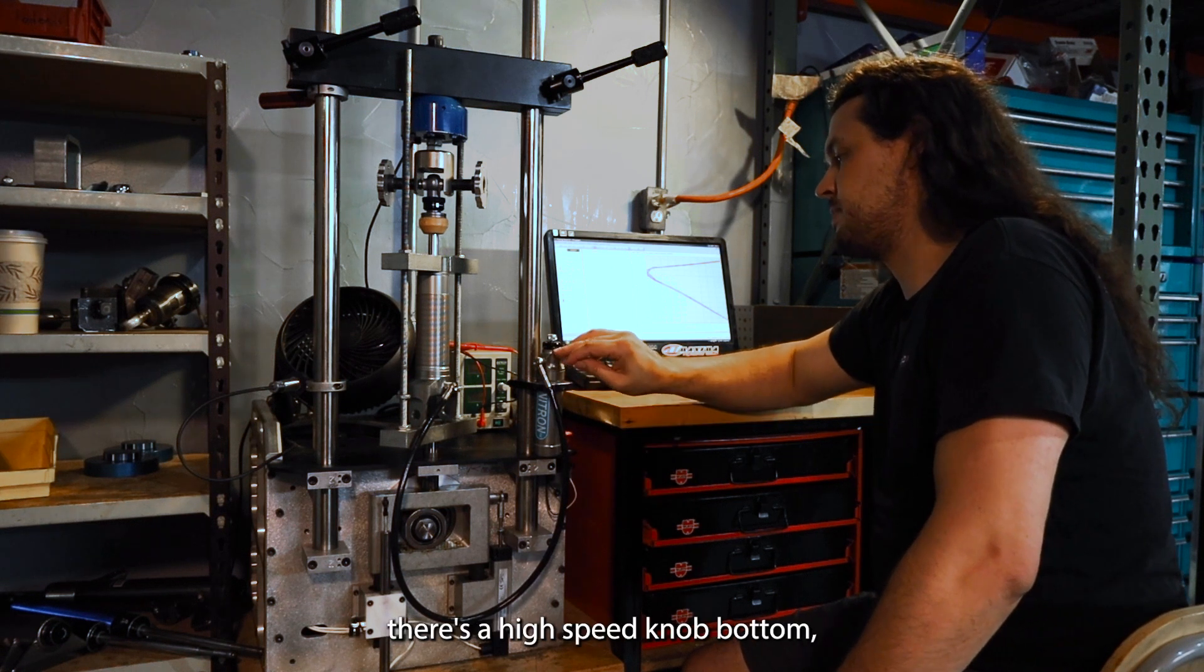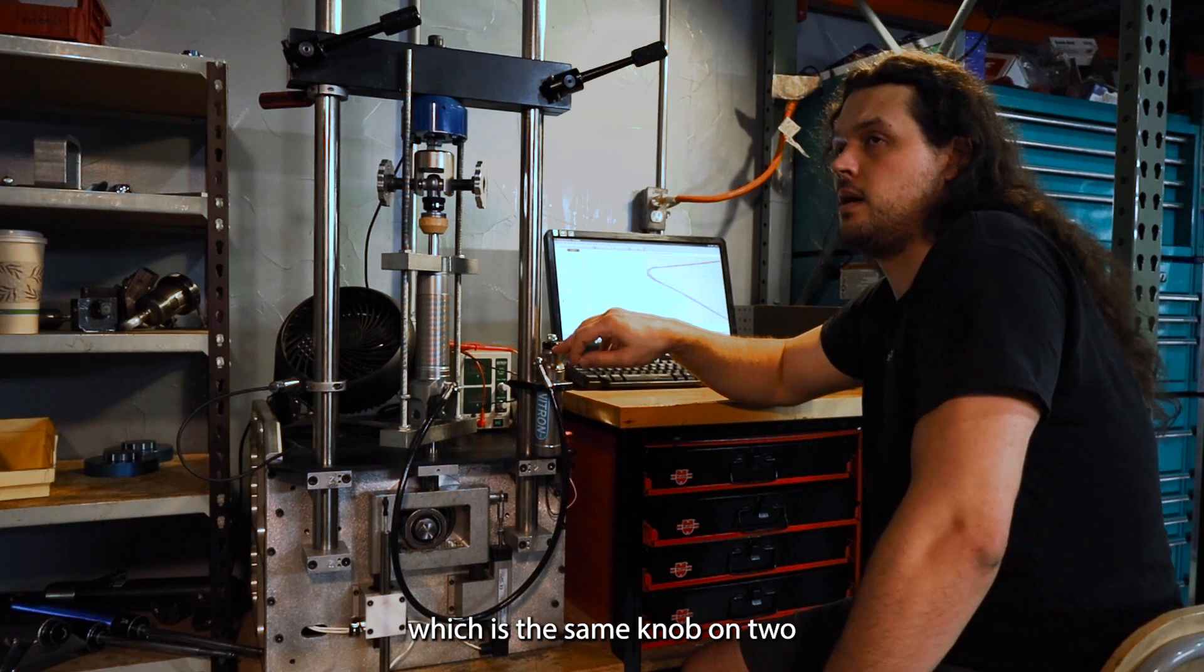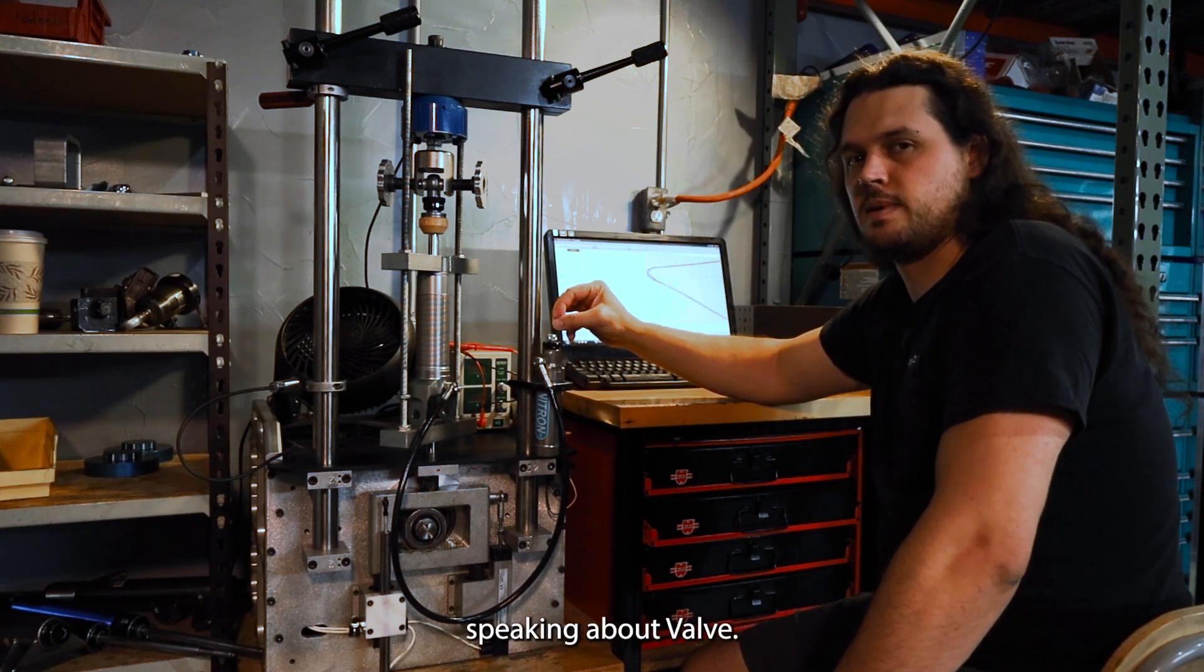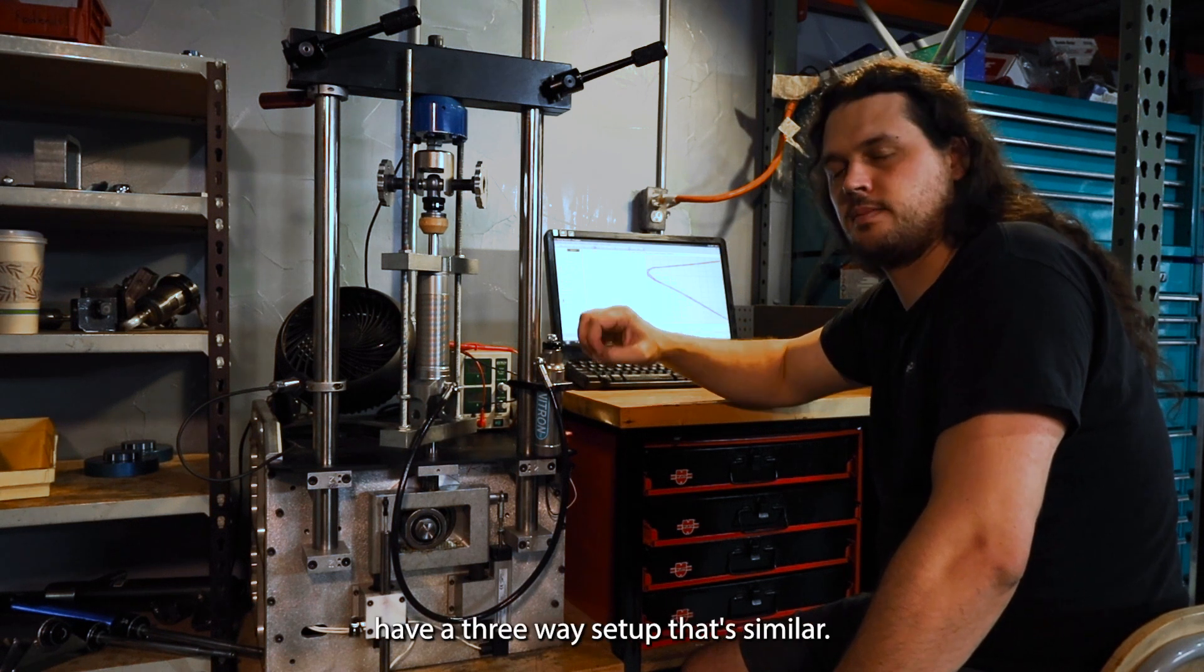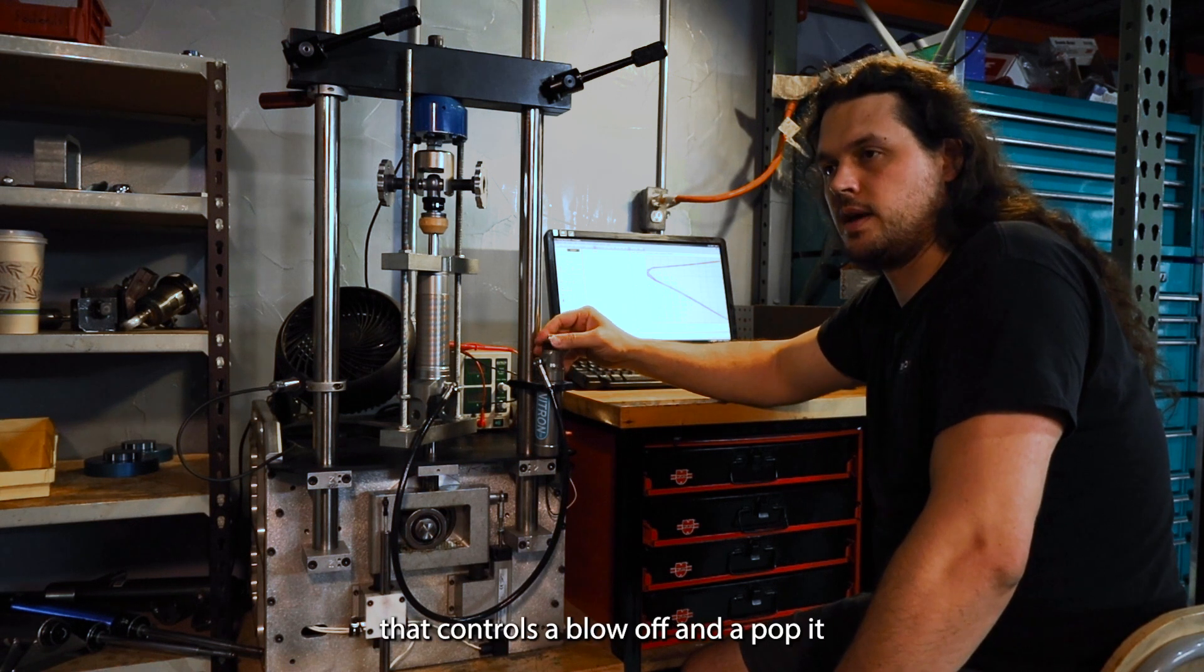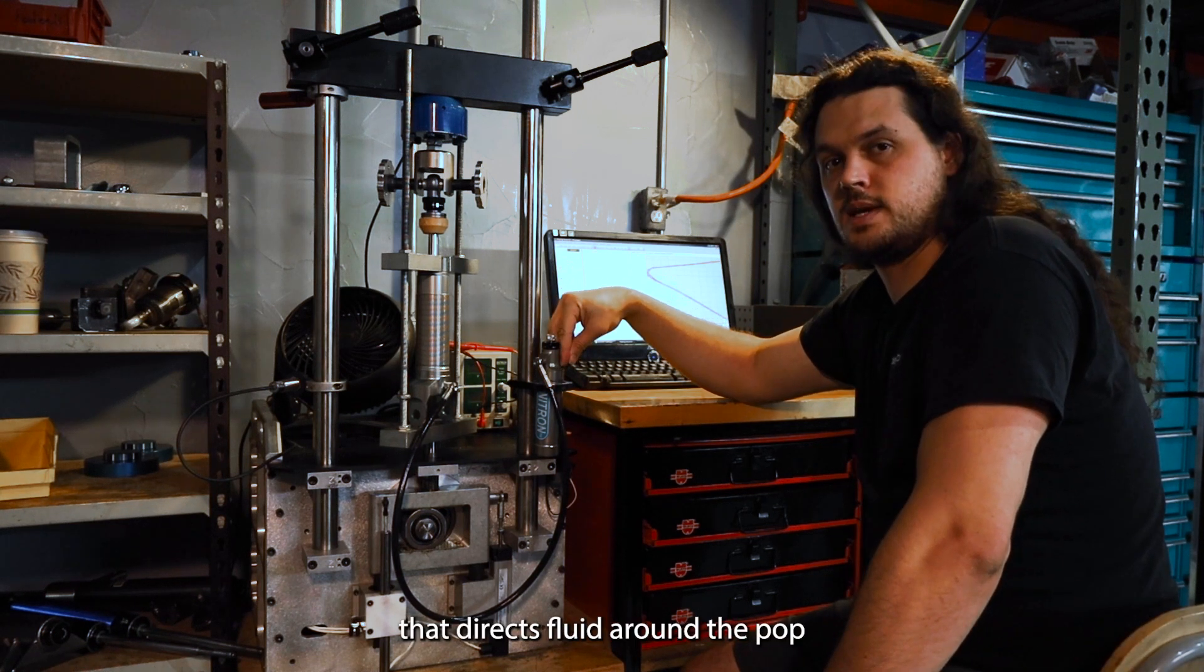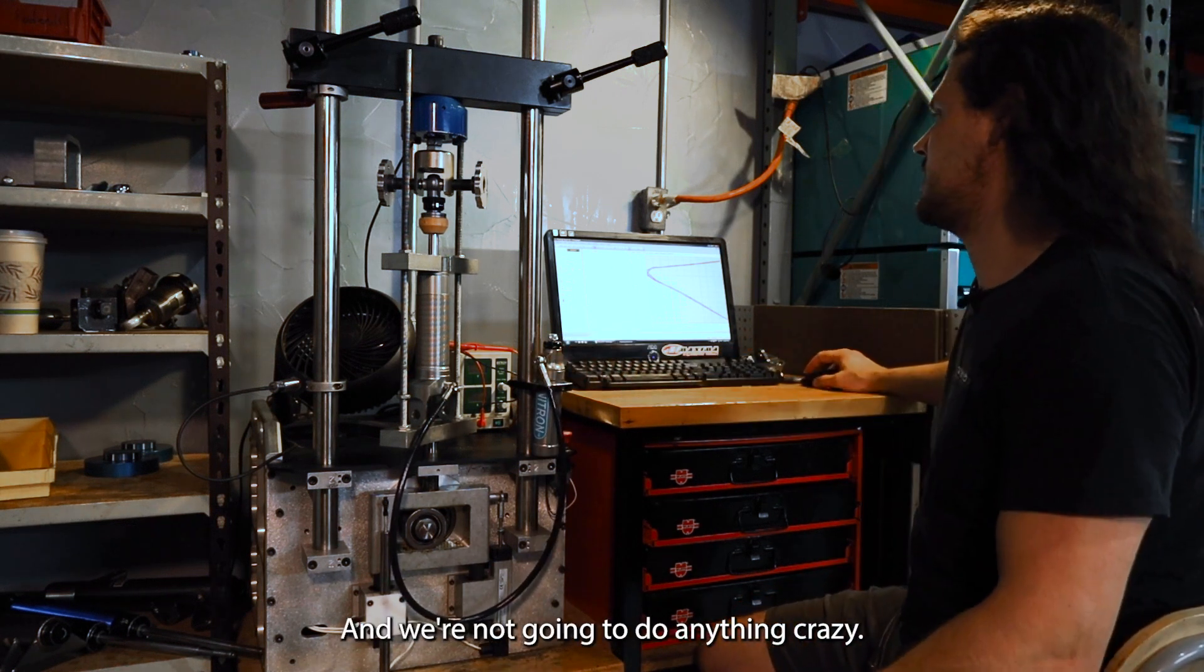Essentially what we have here is the high speed knob on the bottom, which is the same knob on a two-way. A common two-way, a lot of two-ways operate this way, not all of them. So I'm just going to be speaking about how Jerzy's, Motons, Penske 8760s have a three-way setup that's similar. But the two-ways, a lot of them are still just the high-speed valve that controls a blow-off and a poppet. The low speed on top is just a bypass that directs fluid around the poppet valve. So I'm going to show you what that does and we're not going to do anything crazy, just go to like five inches a second or something like that.